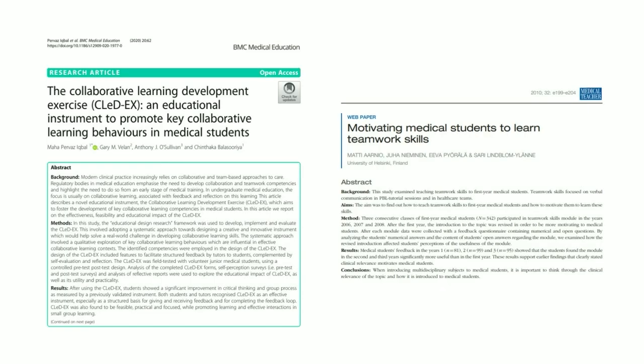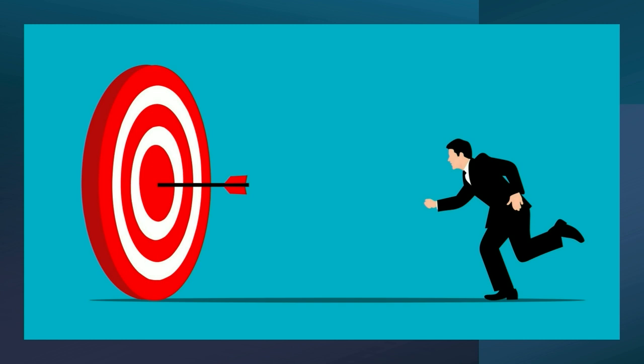It may be worthwhile for learner groups to set ground rules for themselves — to agree on behaviors they think are optimal for creating a safe forum for speaking and being heard. It can also be worthwhile to provide direct training on these skills. We as educators go through simulation facilitation training, debriefing training, clinical bedside teaching training — well, maybe learners could also benefit from direct training on how to be effective small group members, to help them work well in teams.